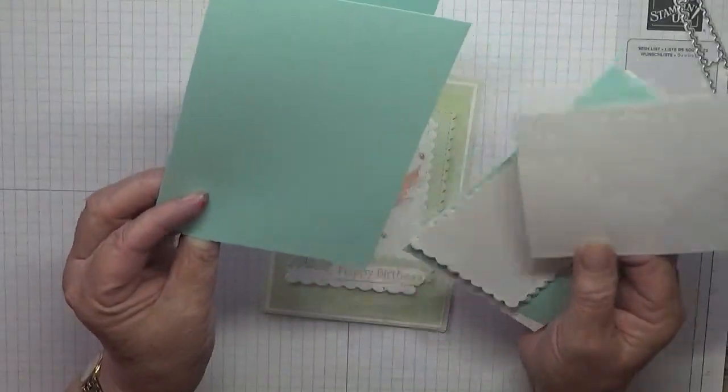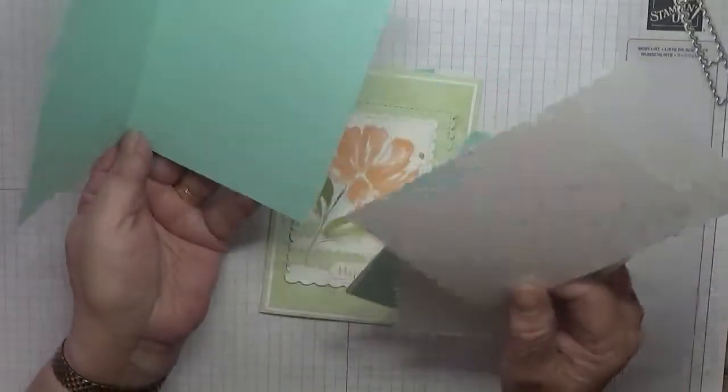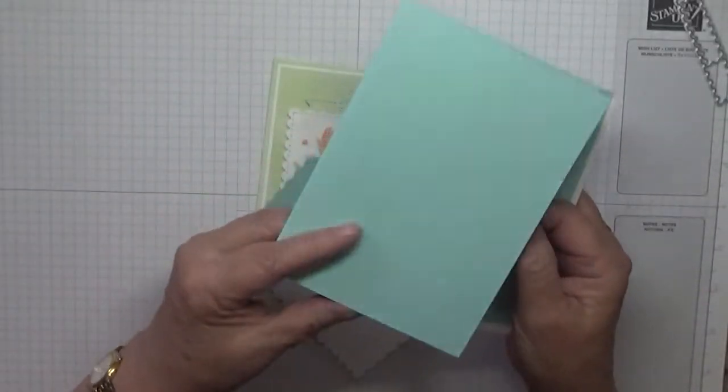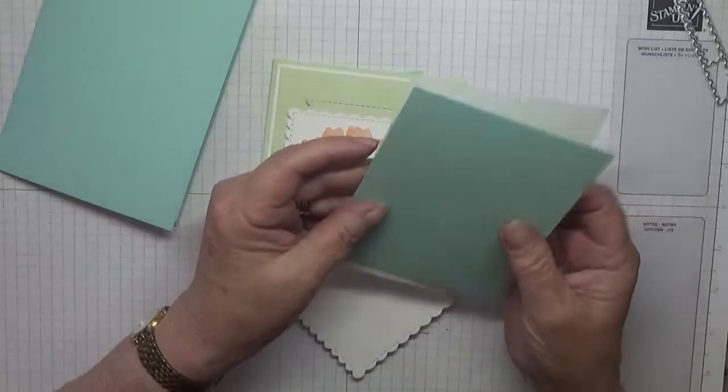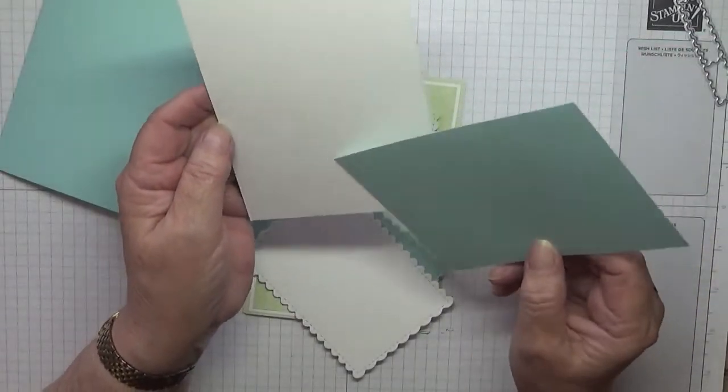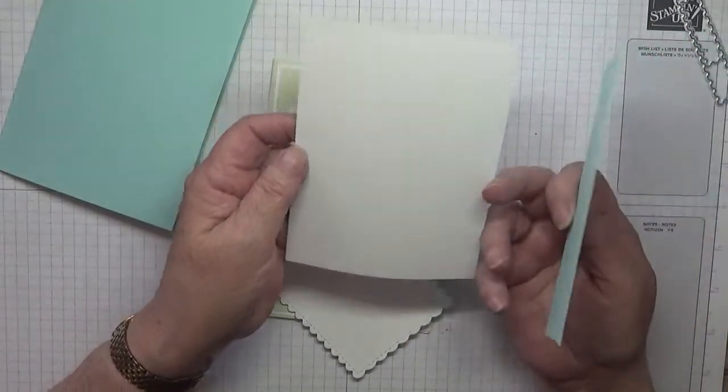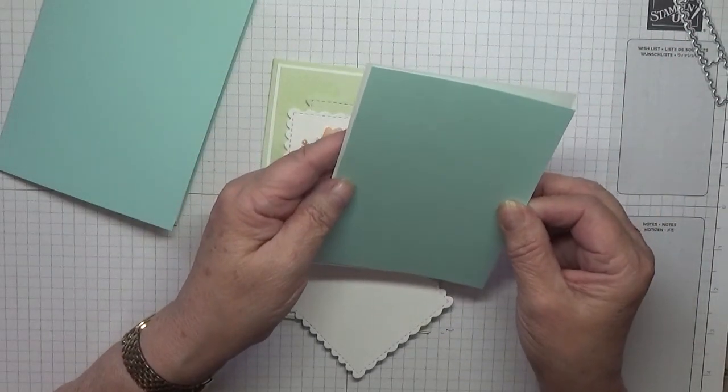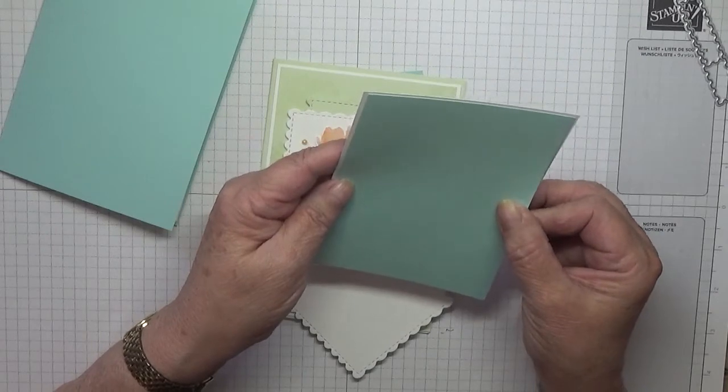I have a piece of white at 5 5/8 by 3 7/8 inches for the inside. I have another piece of white at 5 5/8 by 3 7/8 inches, and another piece of Pool Party at 3 3/4 by 5 1/2 inches.